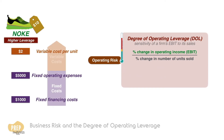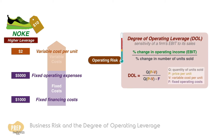To calculate DOL, use this formula where Q is the quantity of units sold, P is the sale price per unit, V is the variable cost per unit, and F is the fixed operating costs. Note that this should not include any fixed financing costs, as we're only interested in the operating leverage at this stage.